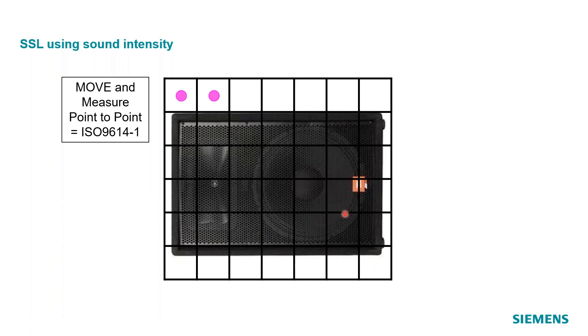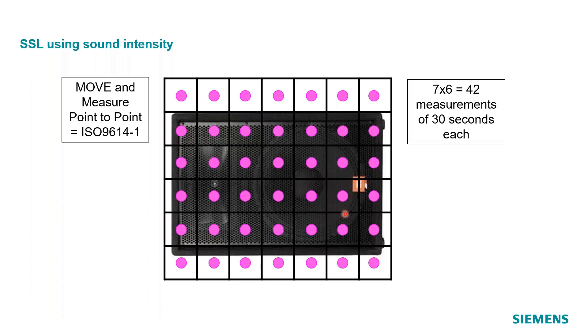And then we're going to move to this grid point, and we're going to make another measurement, and so on and so on until we fill up this whole grid. And we have a total of 42 measurements. Each of them is 30 seconds long. And so we've spent a significant amount of time making this measurement. So it's not a fast measurement by any stretch of the imagination, but we'll also be able to calculate the sound power.